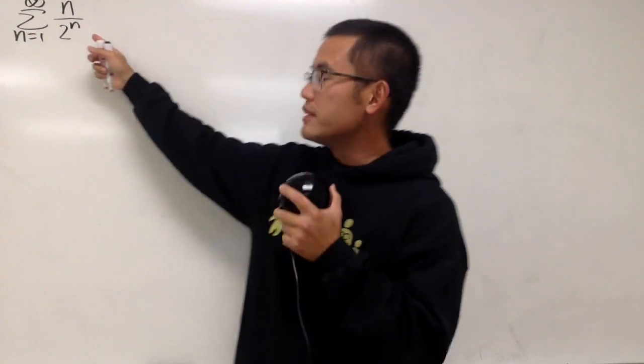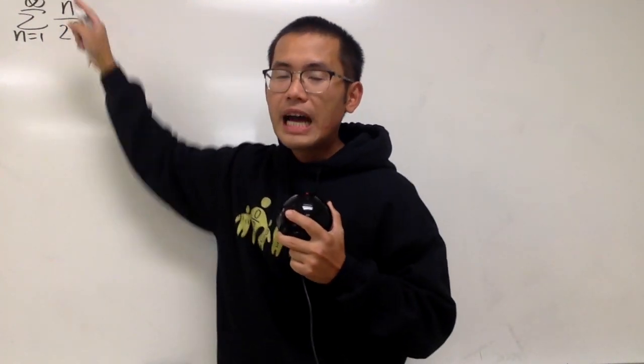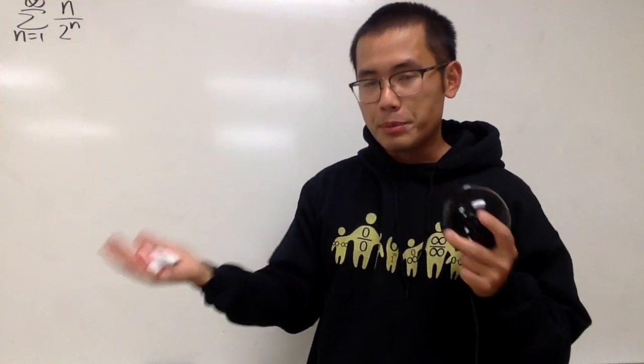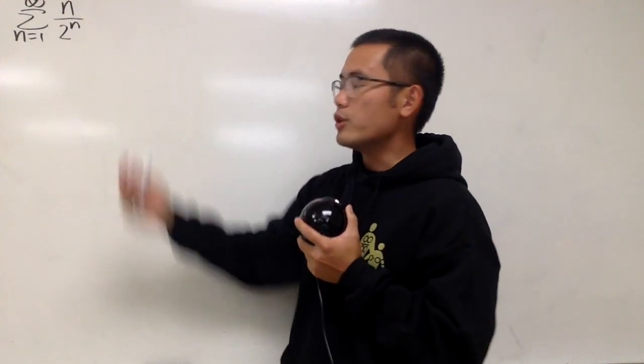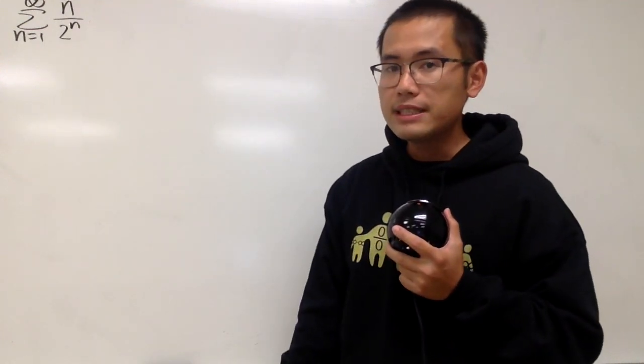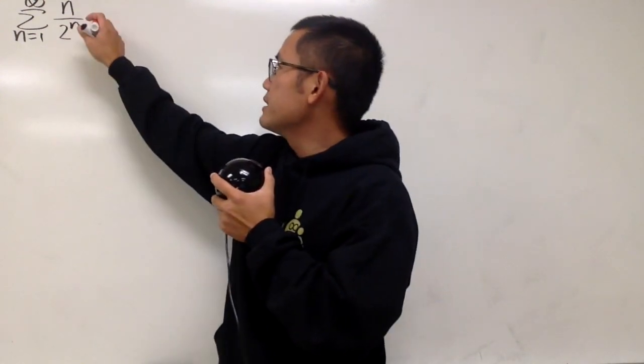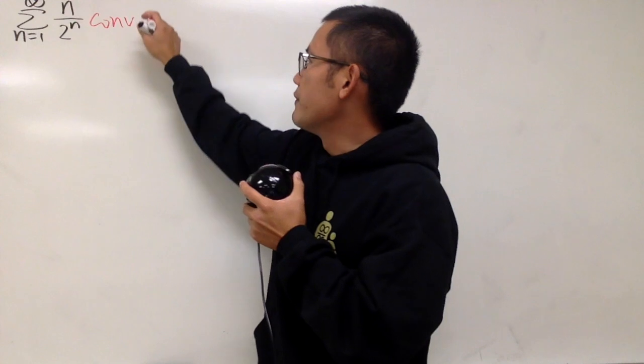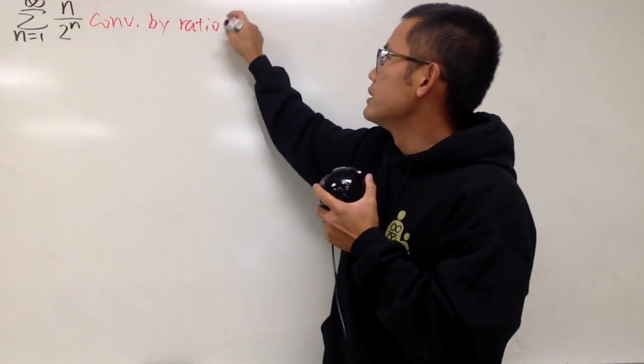Well, notice that this right here is not a geometry series because we have n on the top. If the top was equal to just 1, that would have been much easier, because it's just a geometry series. However, this is a classic question, and what we should do first is see if this right here converges or not, and we can do so by using the ratio test. I'm going to leave that to you guys. I will just tell you guys that this right here does converge, and this converges by the ratio test.